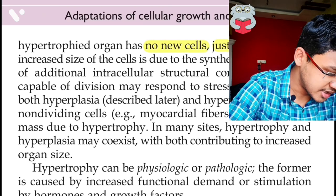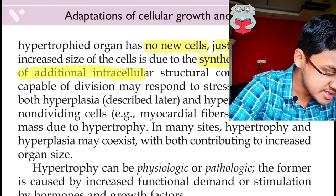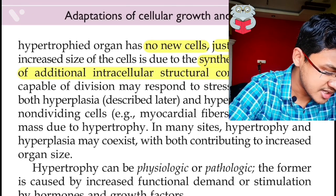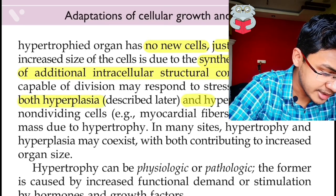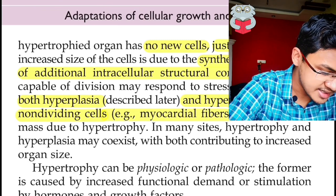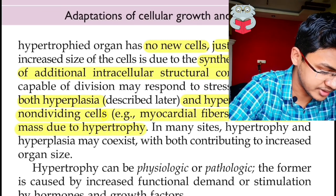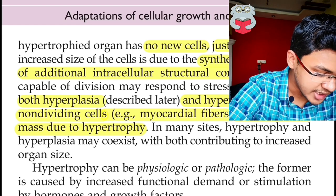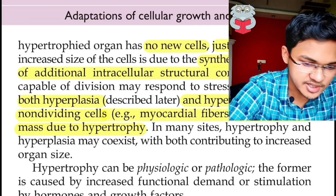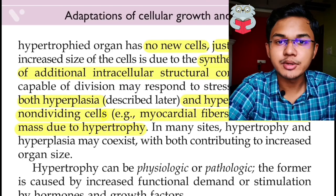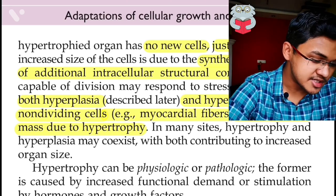Moving ahead: hypertrophied organ has no new cells, just larger cells. The increased size of cell is due to synthesis and assembly of additional intracellular structural components. Cells capable of division may respond to stress by undergoing both hyperplasia and hypertrophy, whereas non-dividing cells like myocardial fibers increase tissue mass due to hypertrophy only. In many sites, hypertrophy and hyperplasia may coexist, both contributing to increased organ size.